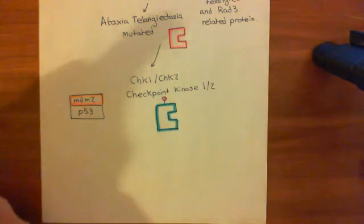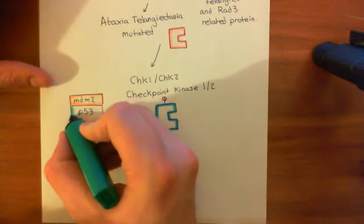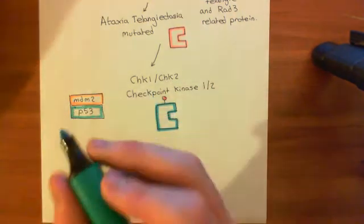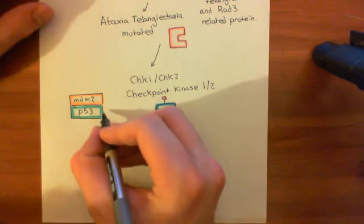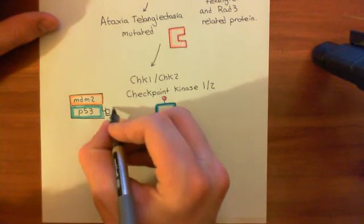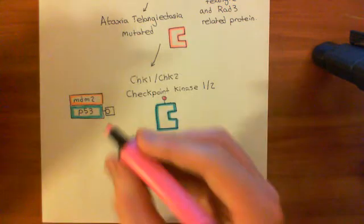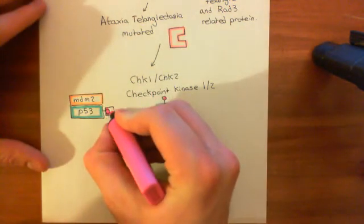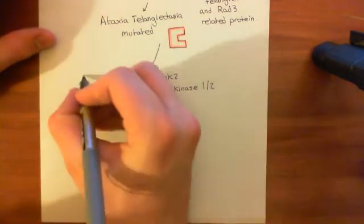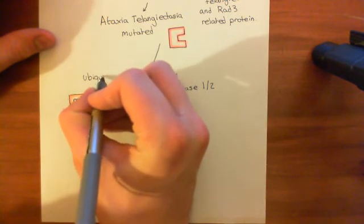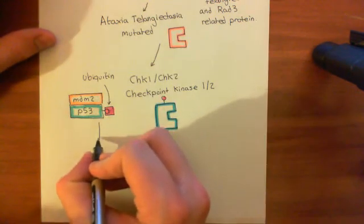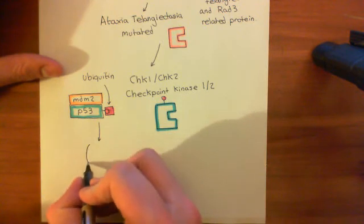But now it's actually going to start catalyzing the addition of ubiquitin groups onto P53. So it's basically going to result in the ubiquitination of P53. So I shouldn't actually draw that in a circle, because I've just told you that circles are how I denote phosphate groups. So I'll draw it as a square instead. So basically, you're going to add ubiquitin groups onto P53. So this is a ubiquitin group.